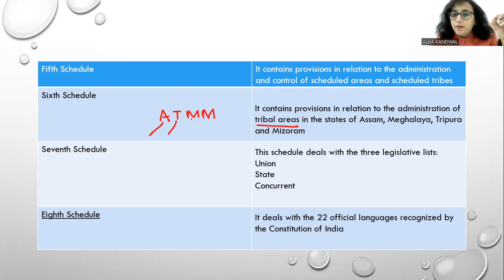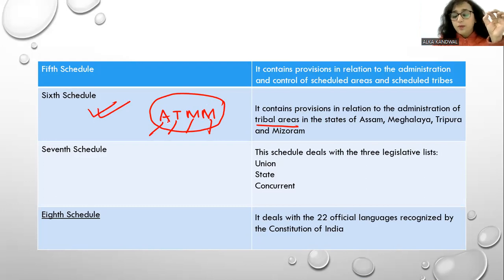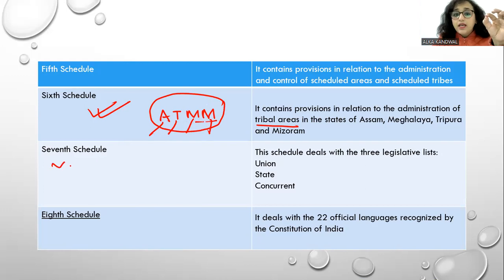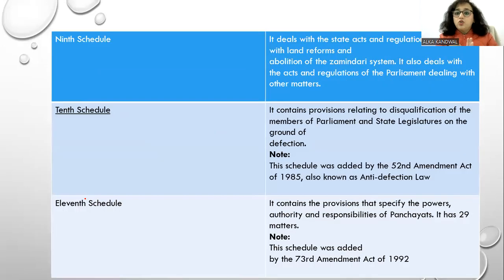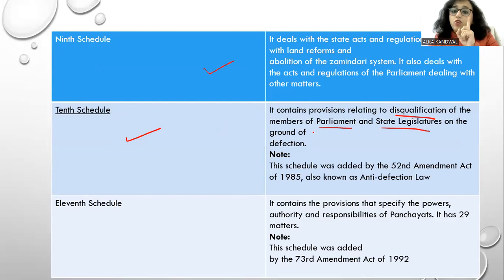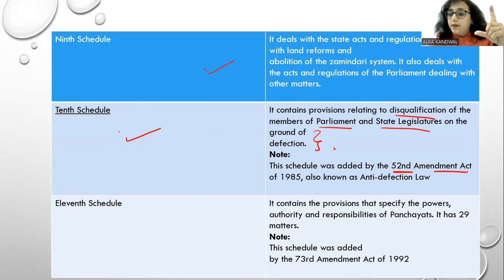The 6th Schedule covers tribal area administration for Assam, Tripura, Meghalaya, and Mizoram — be very careful about this. The 7th Schedule has 3 legislative lists: Union List, State List, and Concurrent List. The 8th Schedule contains the 22 official languages recognized by the Constitution of India. The 9th Schedule contains State Acts related to land reforms and the evolution of the zamindari system. The 10th Schedule covers disqualification of members of Parliament and State Legislatures. It was added by the 52nd Amendment Act of 1985.